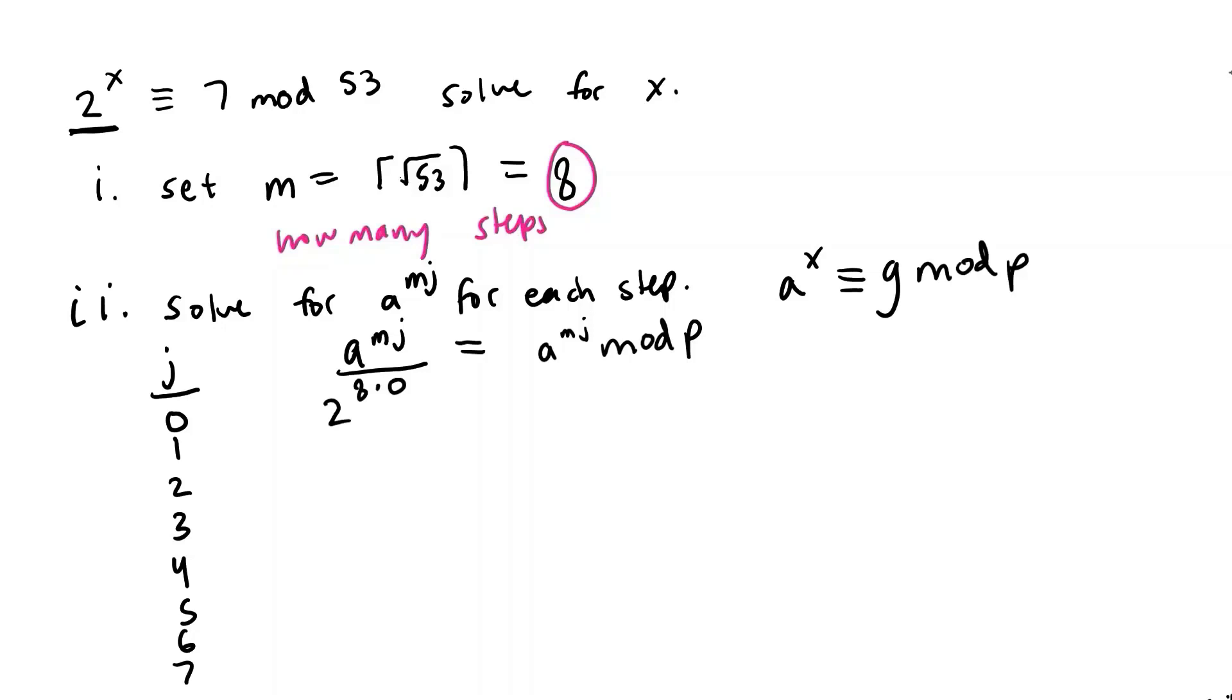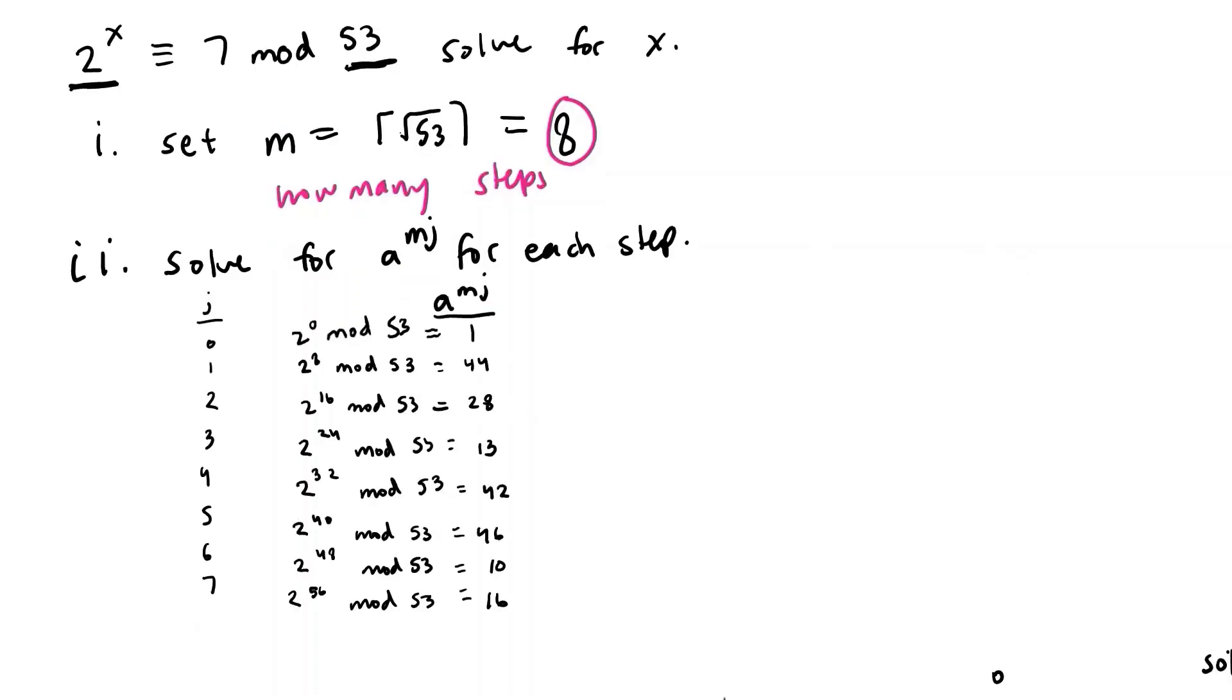So if we write our first step in the same way we have 2 to 8 times 0 mod 53 which is still equal to 1. Now I'm going to go ahead and finish the rest of these calculations and I will just come back and put in the completed chart. So you can pause the video and work them out yourself and press play when you're ready.